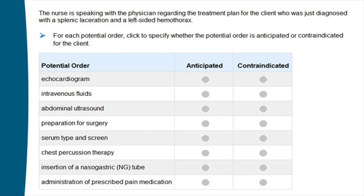The item reads: 'For each potential order, click to specify whether the potential order is anticipated or contraindicated for the client.' This item type is not on today's NCLEX — it is brand new for Next Generation NCLEX. We call it a matrix or grid, where you put answers into rows and columns. Taking it one row at a time: echocardiogram — anticipated or contraindicated? IV fluids? Abdominal ultrasound? Preparation for surgery? Serum type and screen?